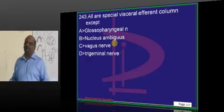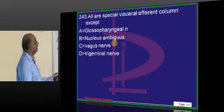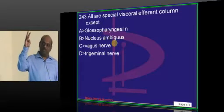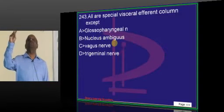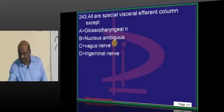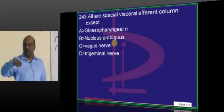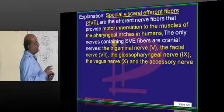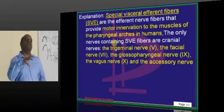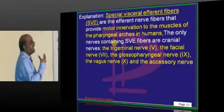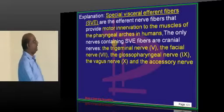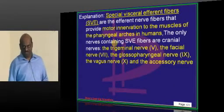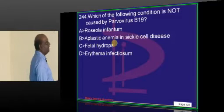What is meant by special visceral efferent column? You must know general visceral afferent, general visceral efferent, special visceral afferent, and special visceral efferent — the classification from embryology. Special visceral efferent are motor fibers supplying the larynx; trigeminal, facial, glossopharyngeal, and vagus all supply the larynx, so they come under special visceral efferent.